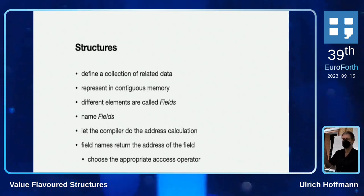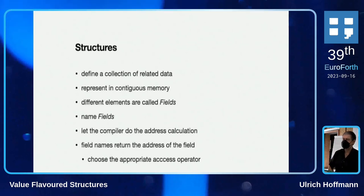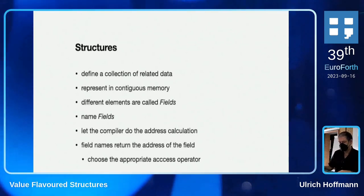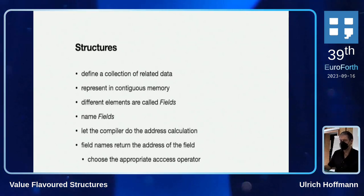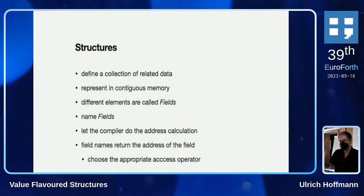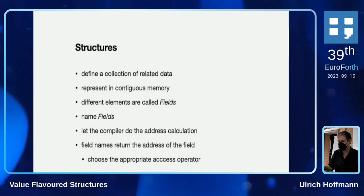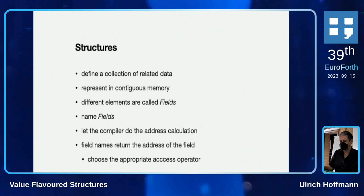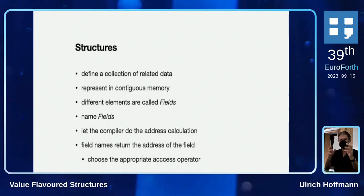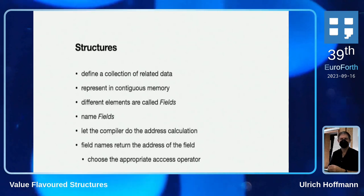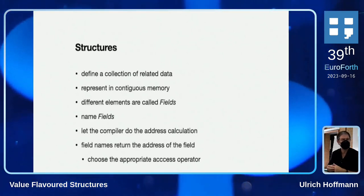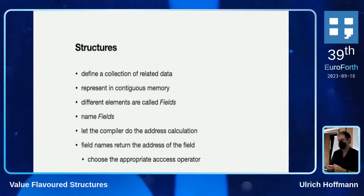So then you can say X for the first number, Y for the second number, which does the address calculation and gets to the offset in the memory. What we currently have in the standard is that field names do the appropriate address calculation and return the address offset within the memory area. Then you have the address, and if you want to access the data you have to choose the correct memory access operator — say, you know, this is a string, so you do count on that string, or if it's an integer or cell you do fetch, or maybe it's a float. You have to remember which field has which type in order to use the correct memory operators.